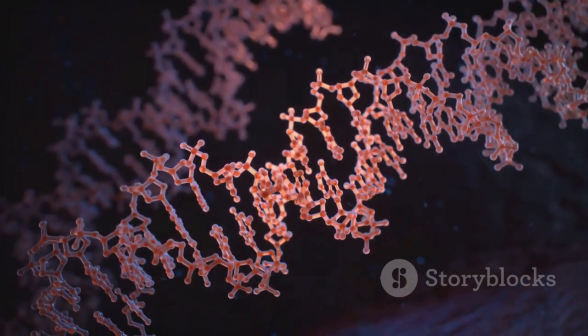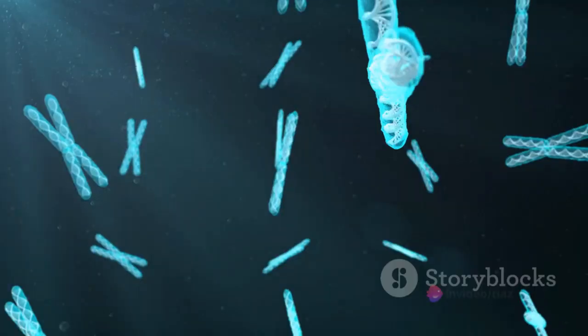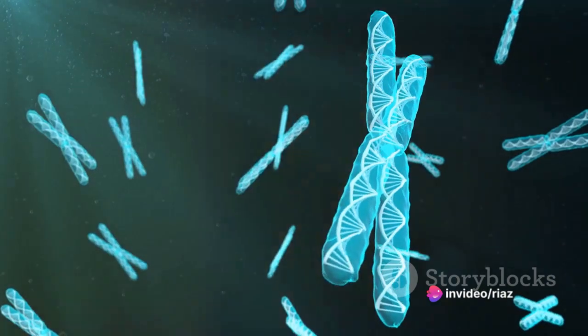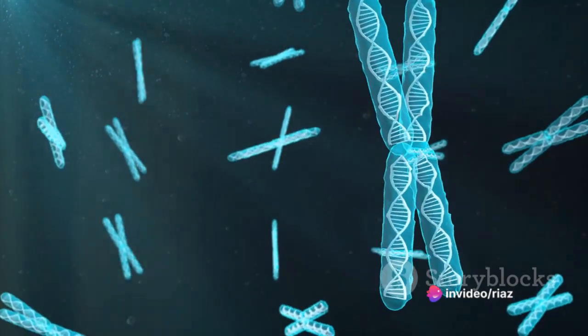Histones help keep the DNA organized and prevent it from becoming tangled. A DNA strand and its associated histones together form a substance called chromatin.